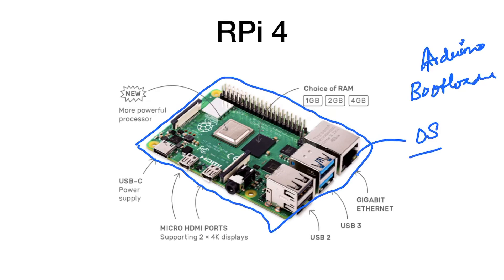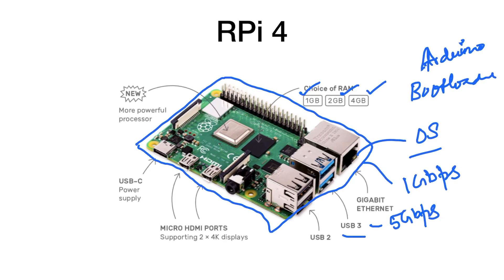Arduino does not have a powerful processing machine, but Raspberry Pi is powerful. In the recent version we have three RAM options: 1 GB, 2 GB, and 4 GB. It has Gigabit Ethernet at a speed of 1 Gbps, USB 3.0 at 5 Gbps, and USB 2.0 at 480 Mbps. There are two USB 2.0 and two USB 3.0 ports.